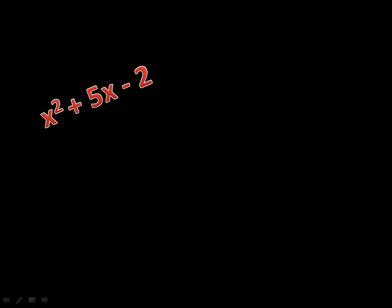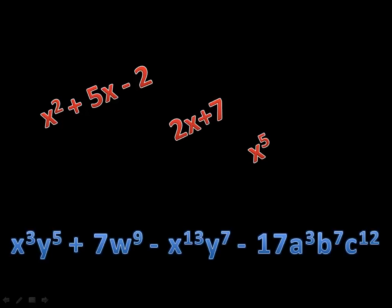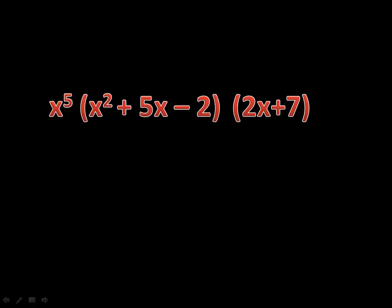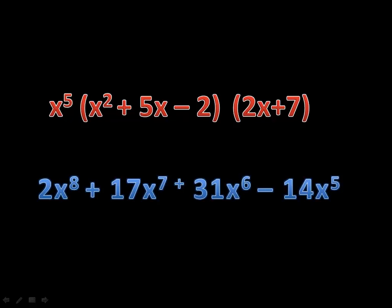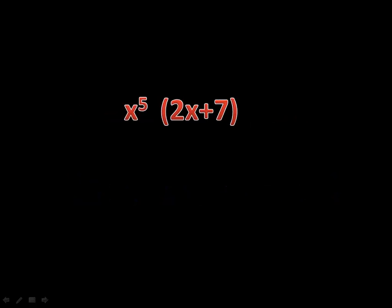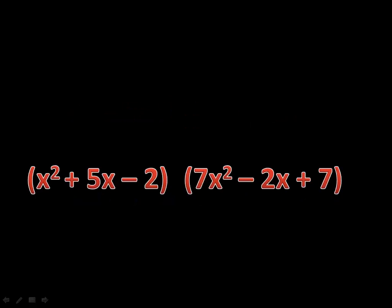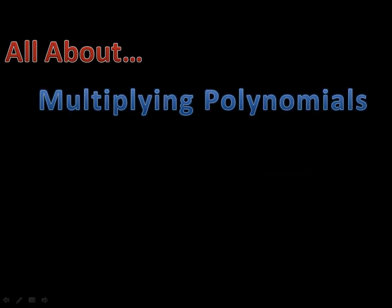Sometimes we have polynomials, and polynomials can have any number of terms — we could have three terms, two terms, one term, or perhaps a whole lot of them. Sometimes we want to multiply them together so that we get something that's a little bit nicer to work with. No matter what we do, the distributive property is our ticket to success. Let's take a look at how we can multiply polynomials.